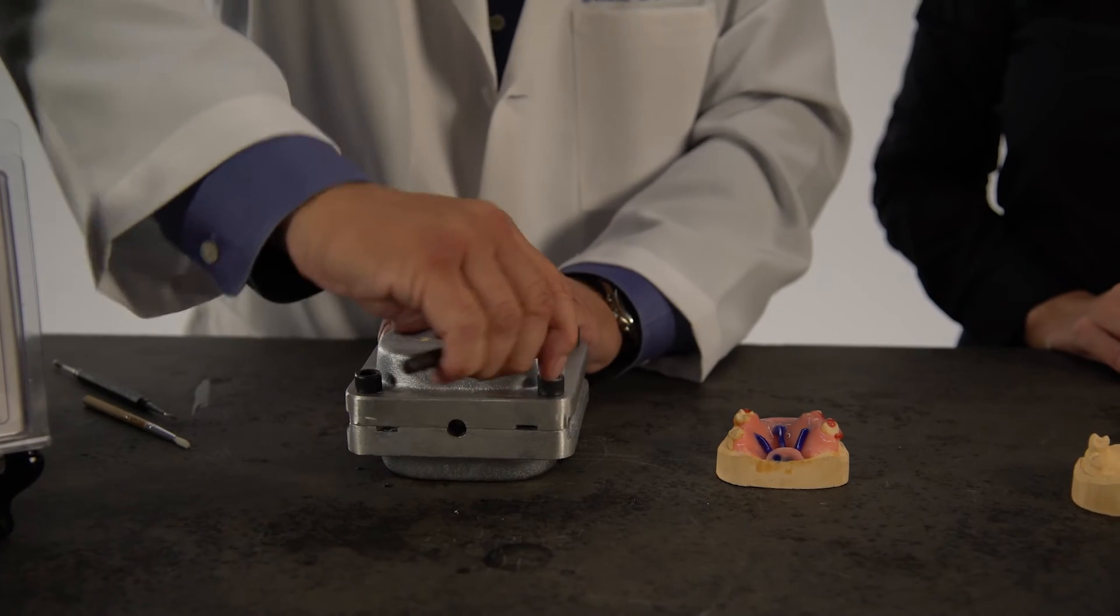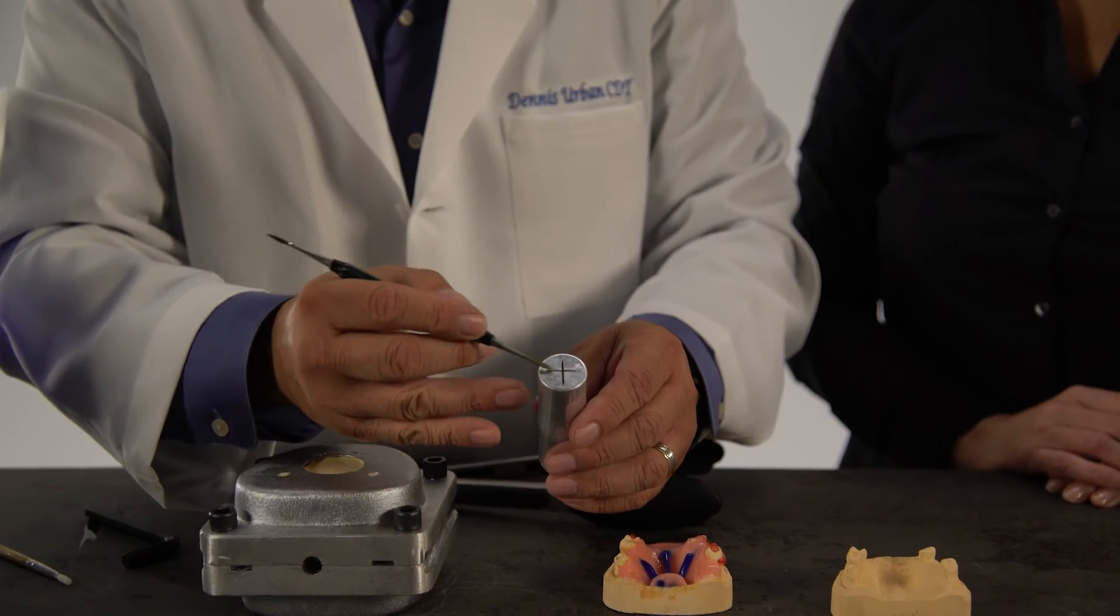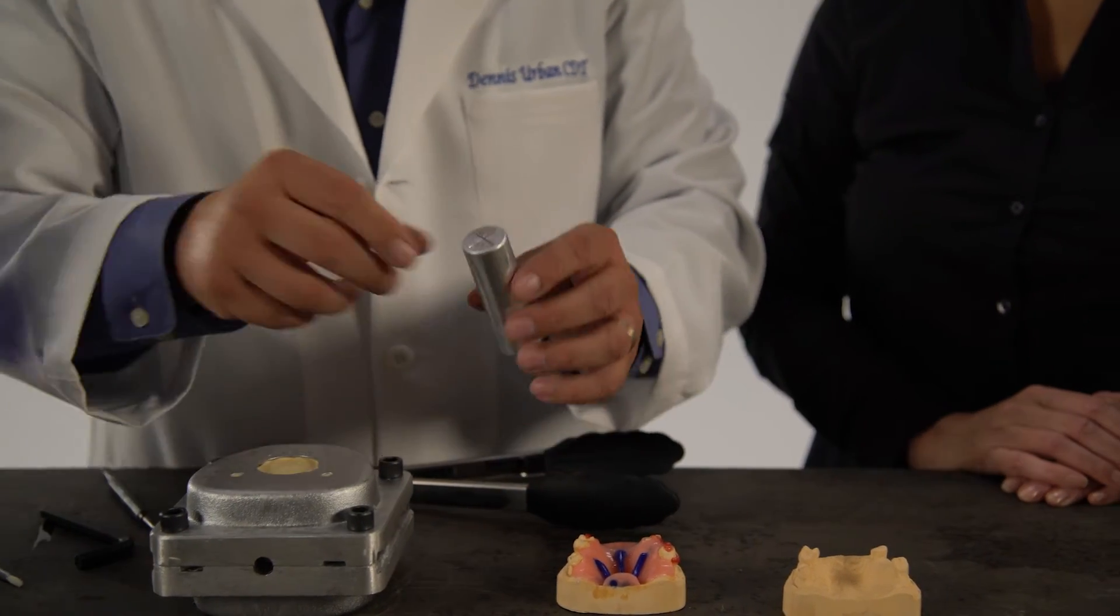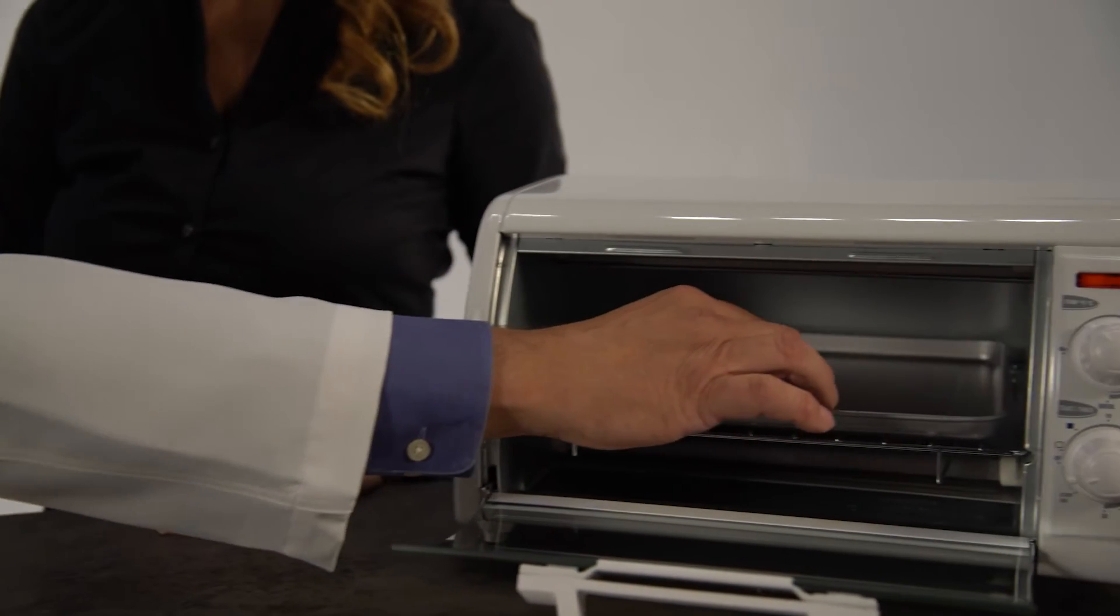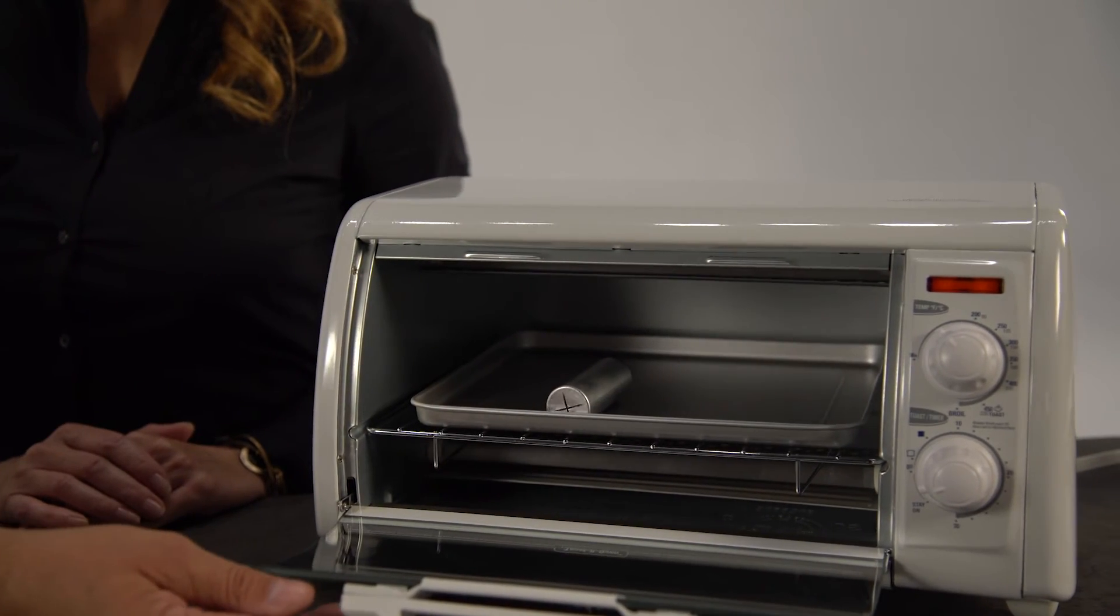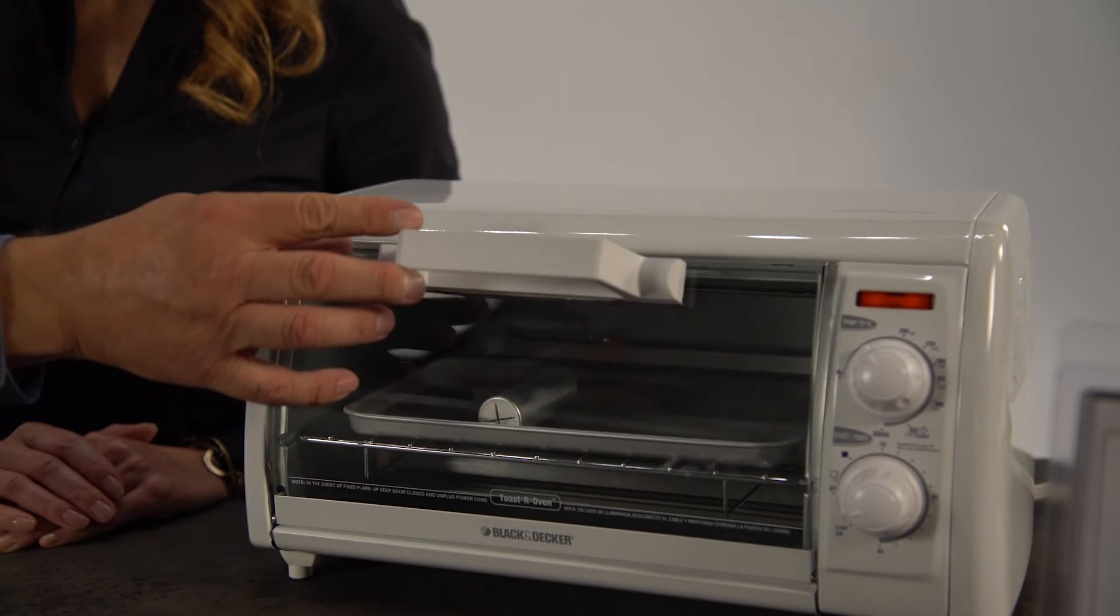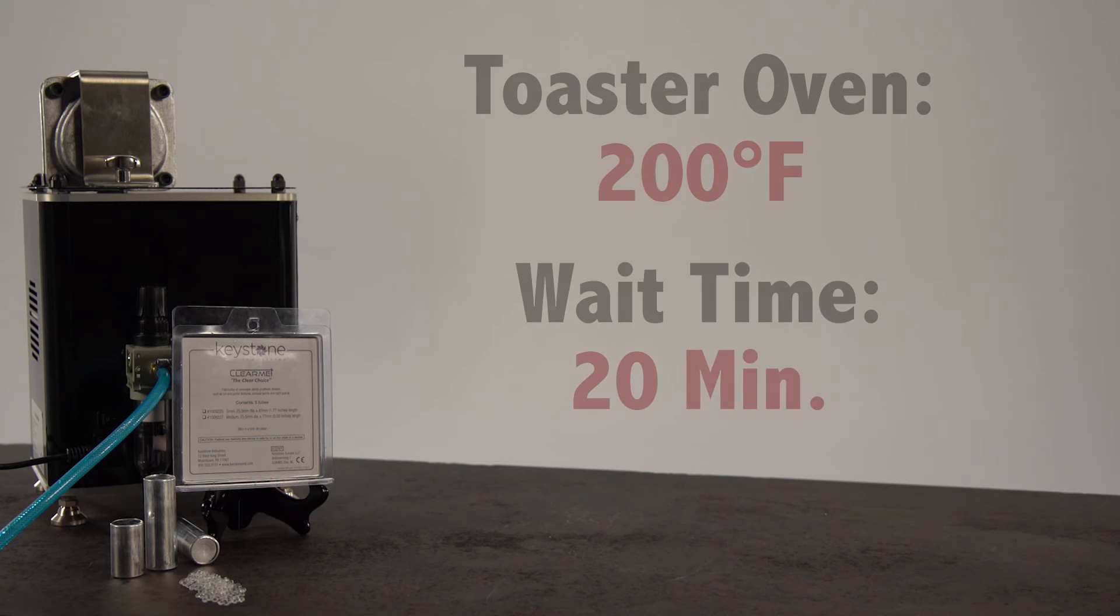While the FlexPress is heating up, take the clear mat tube and cut an X into the top solid section of the tube with a disc. Next place the tube under heat lamps or in a toaster oven for 20 minutes. The temperature of the toaster oven should be around 200 degrees Fahrenheit.